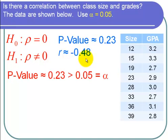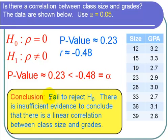What's important is that the p-value which is about 0.23 is greater than the level of significance 0.05 which is alpha. And when the p-value is greater than the level of significance I fail to reject the null hypothesis.